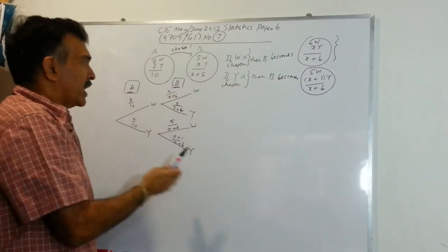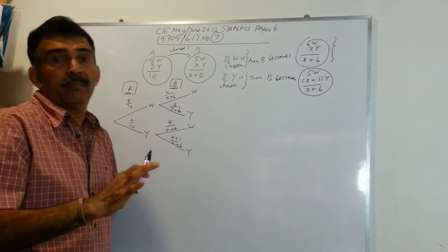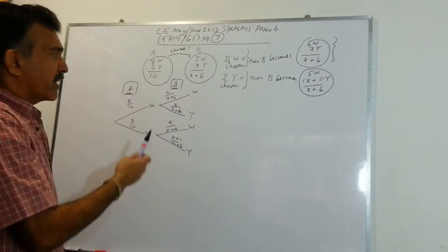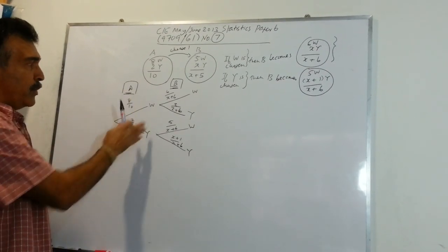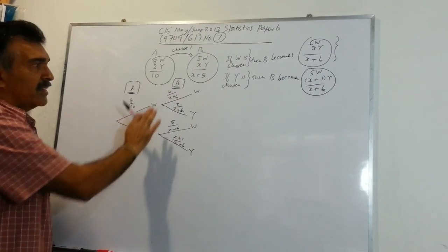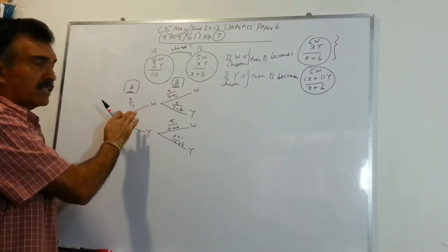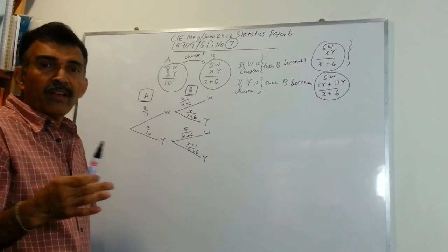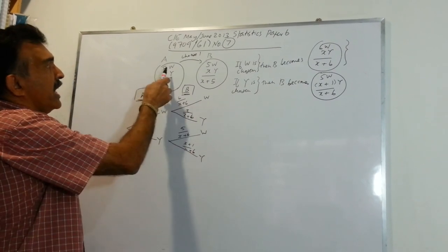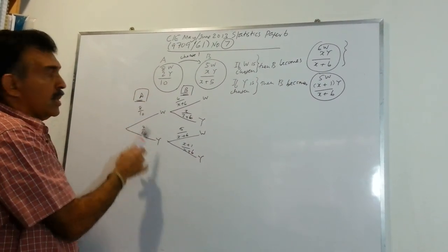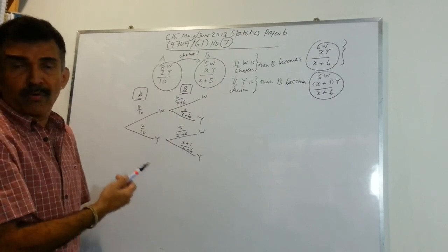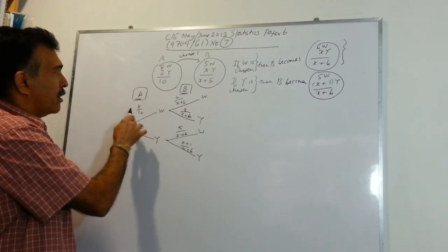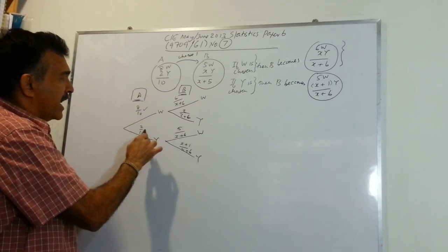If we understand this, we can set up the tree diagram without any problem. The first part of the tree diagram is what I tell my students: this is the pure probability part, and this is the conditional probability part. The first step is picking one from A. The probability of picking a white from A is eight out of a total of ten — eight over ten. The probability of picking a yellow from A is two out of ten.